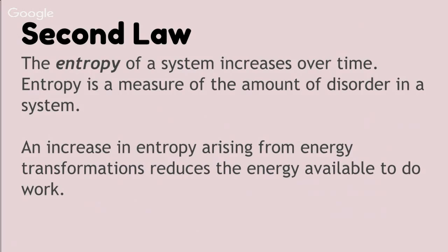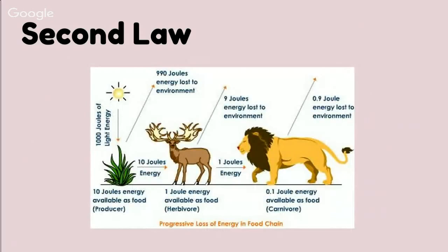An increase in entropy arising from energy transformations reduces the energy available to do work. We talked about heat and evaporation in these different processes, and that is part of entropy as well. We're losing a lot of energy all the time — entropy rules, or entropy increases. This represents random, unavailable energy that organisms can no longer use. Let's look at this diagram: we have 1,000 joules of light energy coming from the sun to a particular plant.